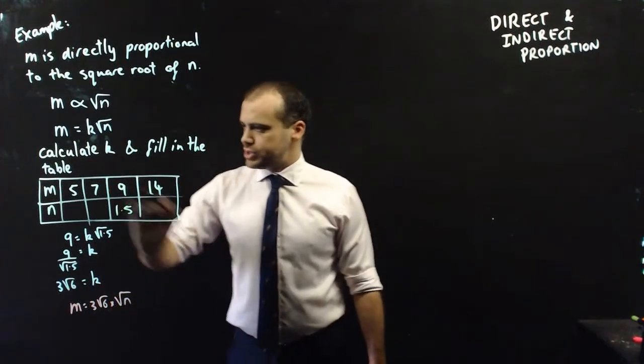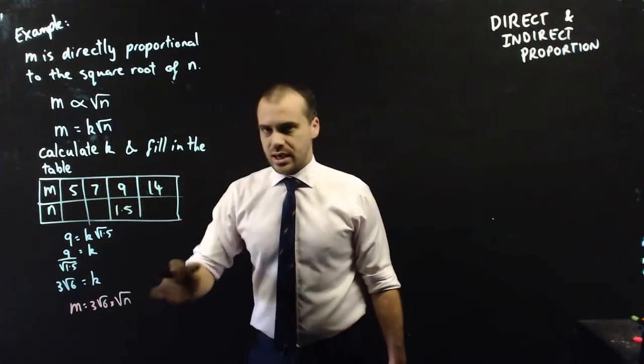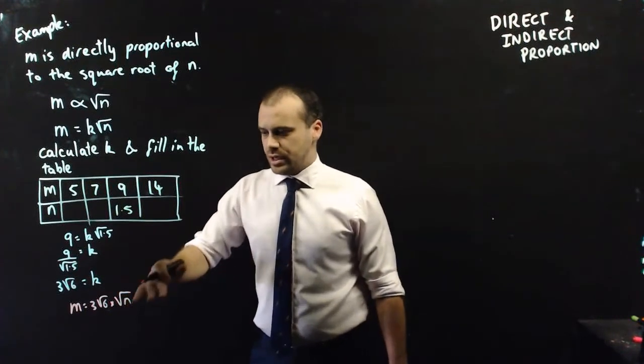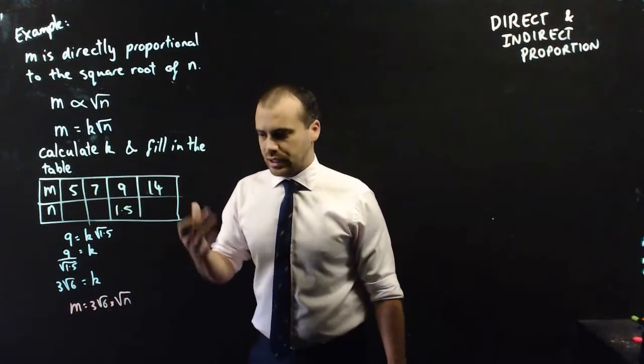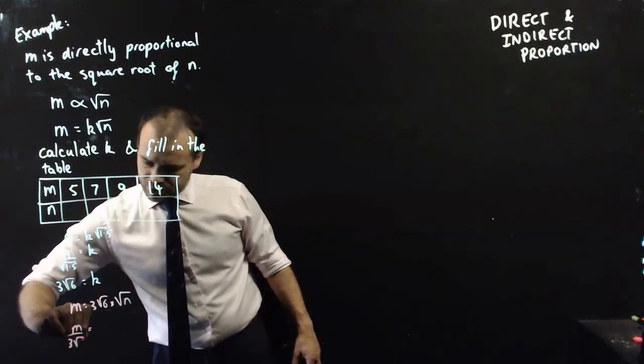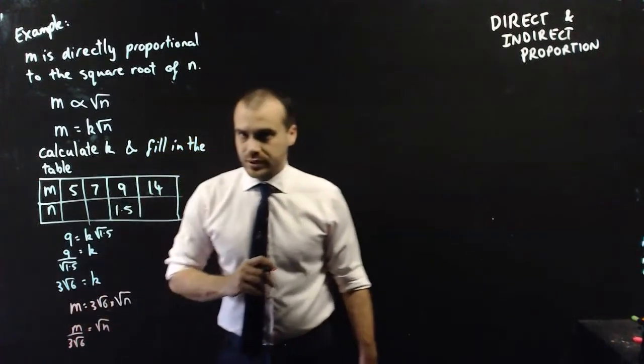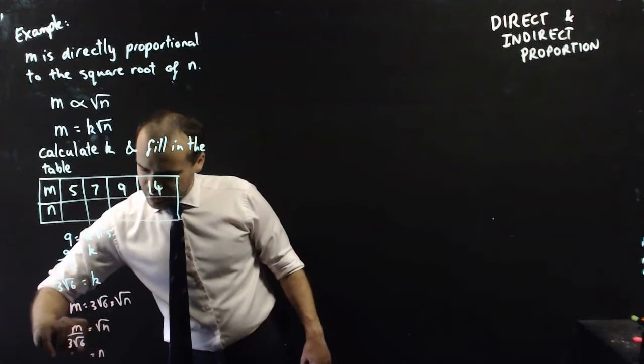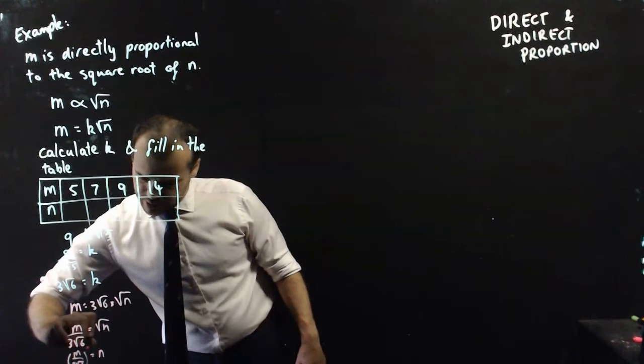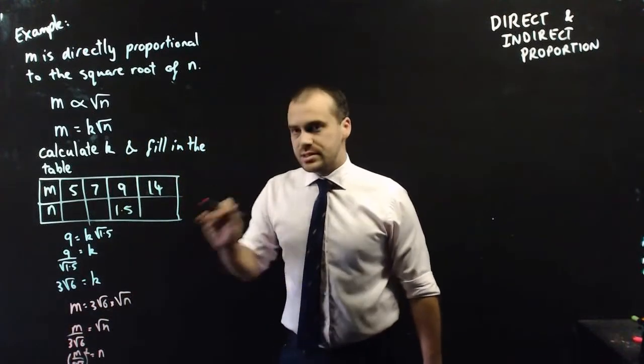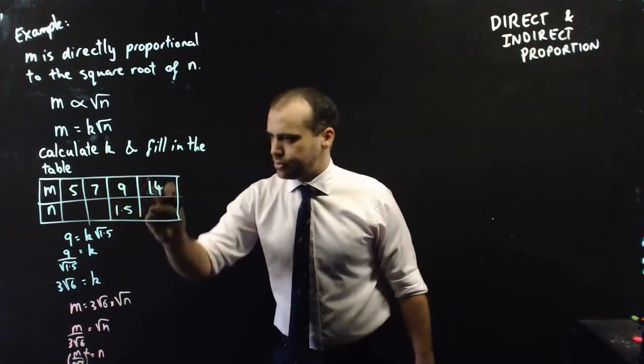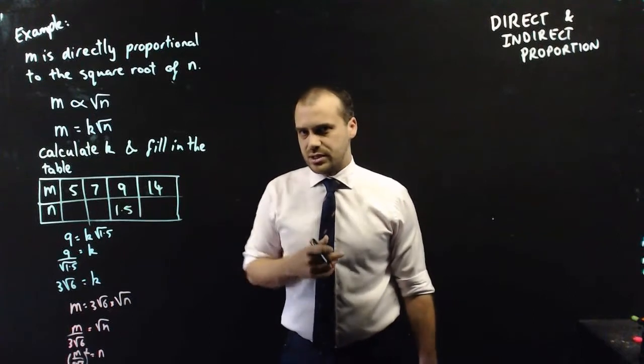From here, we just sub in m values and we get n values out. Now, because we're trying to find n values, it's probably easier if we rearrange this a little bit. So, if I do m divided by 3 root 6 equals root n. And then if I do n equals the square of m over 3 root 6, like that. I can then sub in those m values directly into that formula. Put 5 in for m, put 7 in for m, put 14 in for m. And I'll get all my n values that I need.